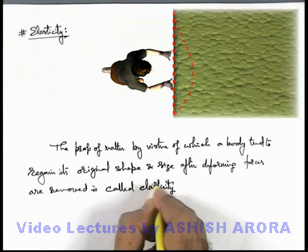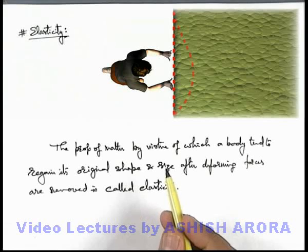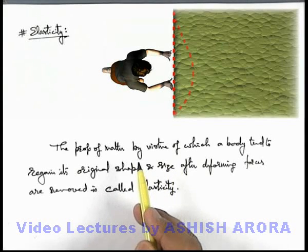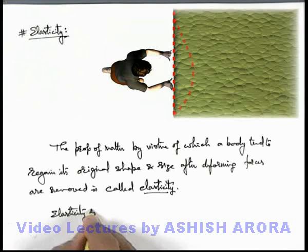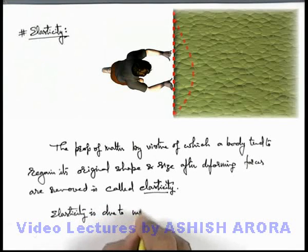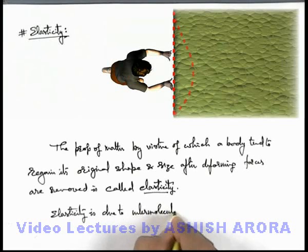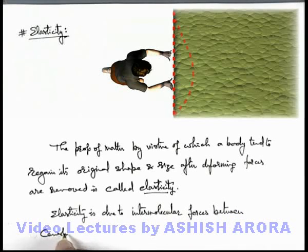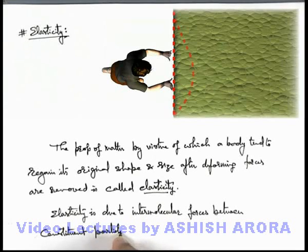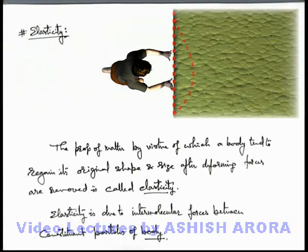So what we have just seen — the property of rubber because of which it has a tendency to regain its original shape — this property we call elasticity. We can also write that elasticity is due to intermolecular forces between the constituent particles of a body. This is the basic definition of elasticity.